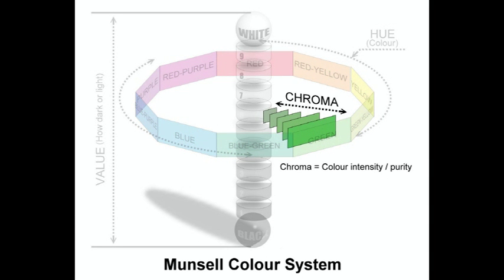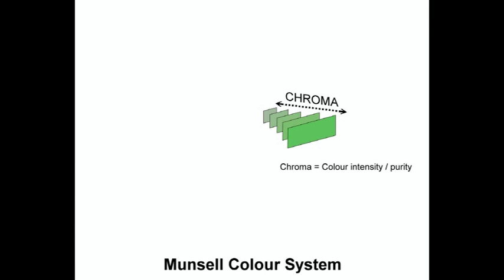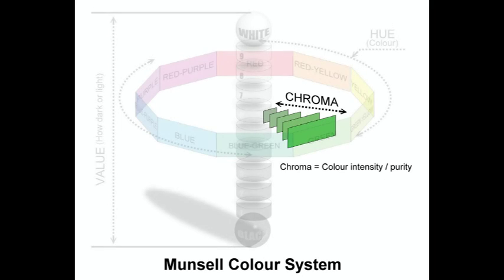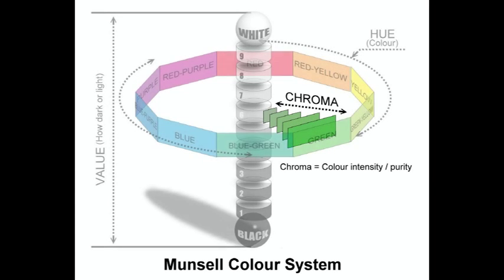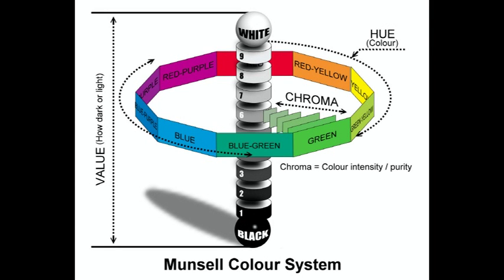The final component of the Munsell color system is chroma — the purity, intensity, or strength of the color. This can be seen in the illustration by looking at the bands of green moving inwards towards the center value pole. Munsell found that certain colors are stronger than others, so he broke the chroma scale into 10 steps. For example, red is strong enough to reach a maximum chroma of 10, while weaker colors may only reach a maximum chroma of 4 or 5. You can see this difference by mixing green — you'll find that blue is much stronger than yellow, so you'll need more yellow than blue to produce a balanced green.